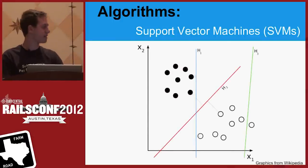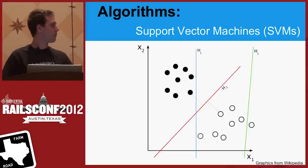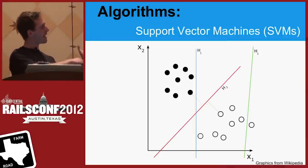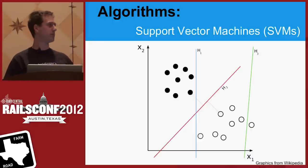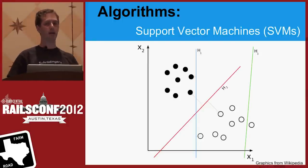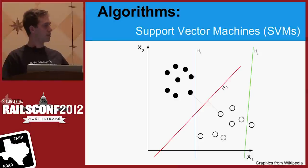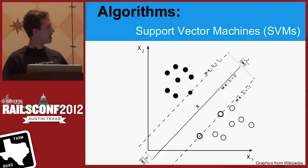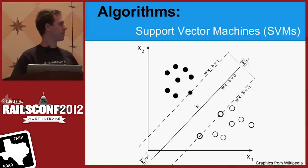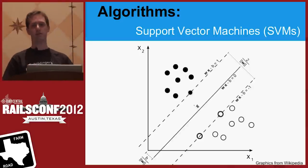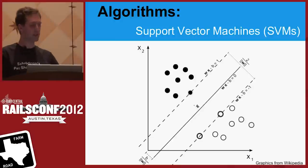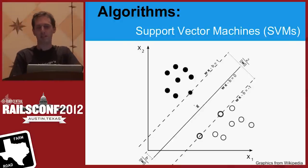Imagine the black dots are spam and the white dots are ham. We're trying to find a line that best separates these two classes, where the axes are two hypothetical features like the number of times the word Viagra appeared. In the real world this would be a very high-dimensional space with 1,500 axes. What support vector machines do is figure out a line that maximizes the margin between the two classes. It doesn't have to be a line — it can be a curved surface called a kernel. There's a library called LibSVM with Ruby bindings that you can use for this.